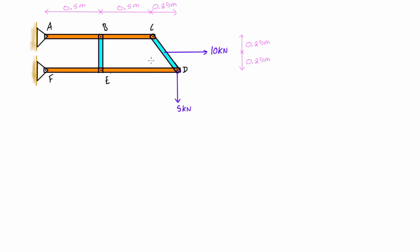This is basically a two-step process. The first step is we draw a free body diagram of the whole structure and then we'll solve for as many reaction forces as we can. There are actually four unknowns and we only have three equations of equilibrium, so we won't be able to solve for all of them. After that, we'll draw an exploded diagram of the whole structure, giving us individual free body diagrams of each member, and then one unknown force at a time, we'll eventually solve for the reaction forces at A and F.